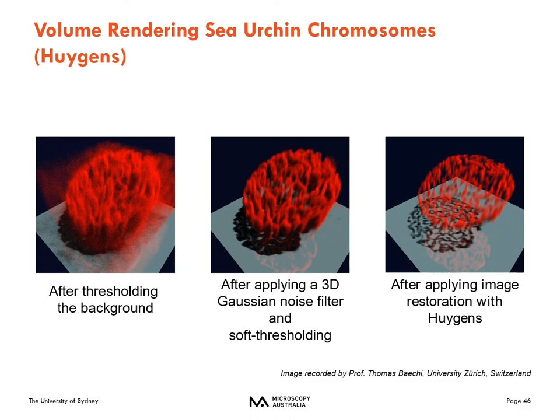Deconvolution is done by taking images of very small beads at very high magnification on the microscope you were using for your project. It then applies a correction algorithm, taking all the out-of-focus scattered light and putting it back where it should be within a ball — because we know the ball is spherical. By applying this algorithm to the whole image of the chromosomes, to put all the light back where it should be, the image looks visually more appealing, the data is much more powerful, and it allows you to see things in greater resolution and perform more precise measurements.